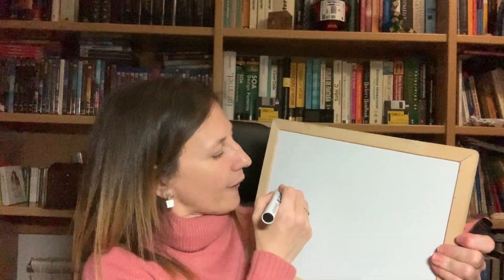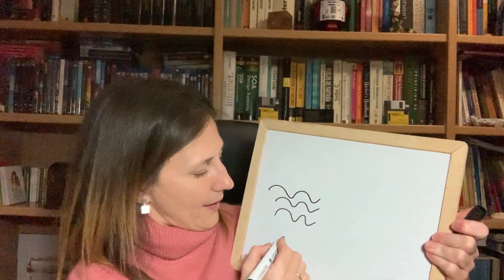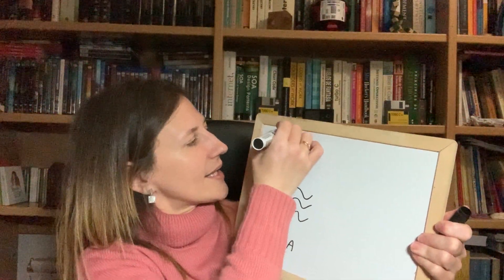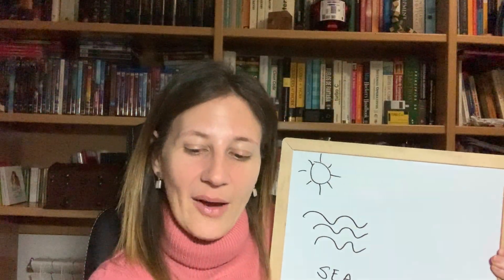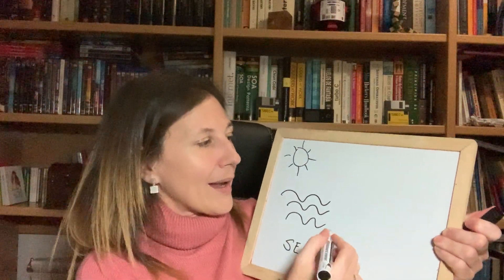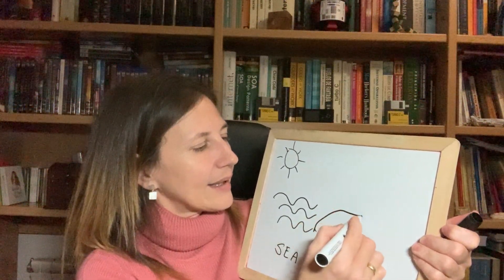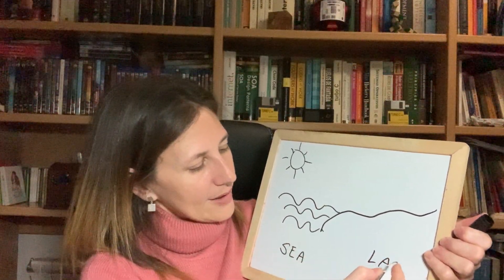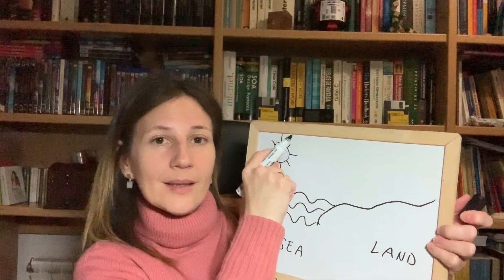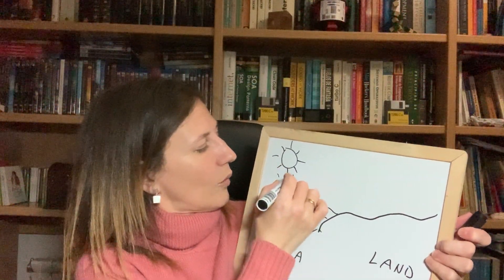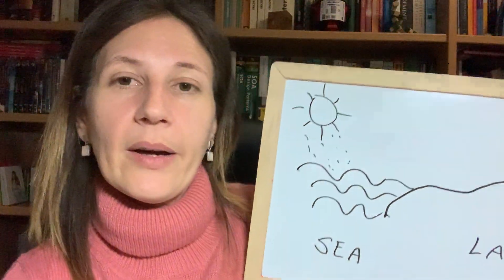I'm going to use my whiteboard to explain it a little bit better. Here I have the sea — the sea is heated by the sun, like my hot cup. Now the sea is warm, and here I have the air. This is the land close to the sea, and all around we have air. The sun hits the water — is that clear? The sun hits the water.